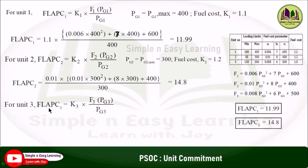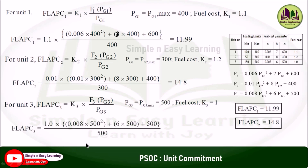For unit 3, PG3 = PG3 max = 500 and fuel cost K3 = 1. Substituting into the fuel cost function gives FLAPC3 = 11.